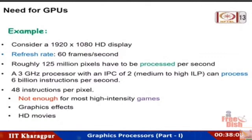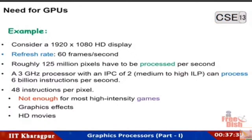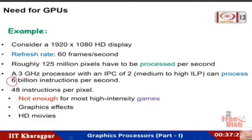So what is the need for a GPU? Consider a display with 1920 pixels on one axis and 1080 on the other — an HD display. At a refresh rate of 60 frames per second, roughly 125 million pixels have to be processed per second. A 3 GHz processor with an IPC of 2 processes about 6 billion instructions per second, which gives roughly 48 instructions per pixel.